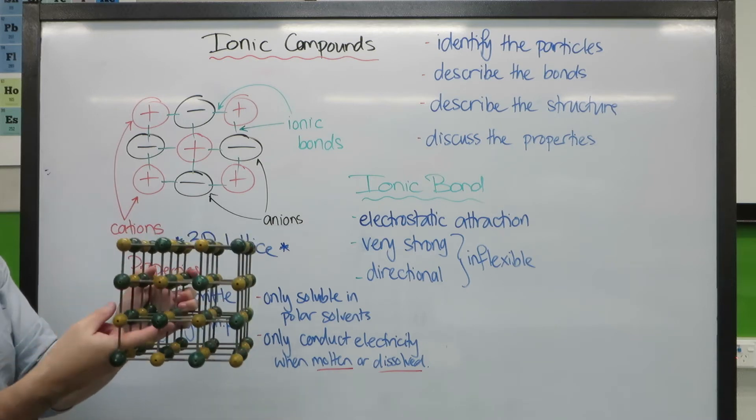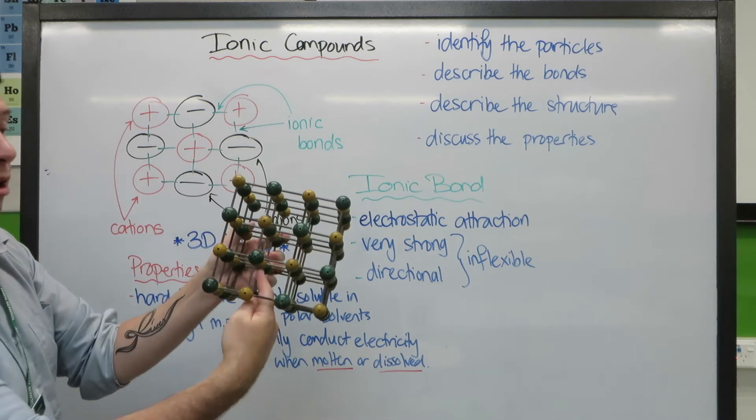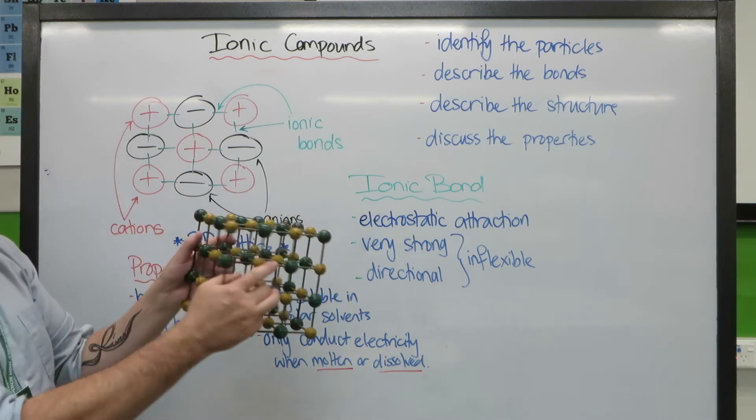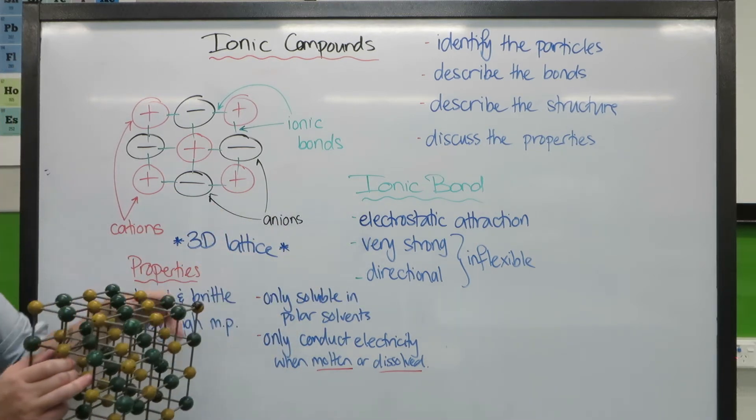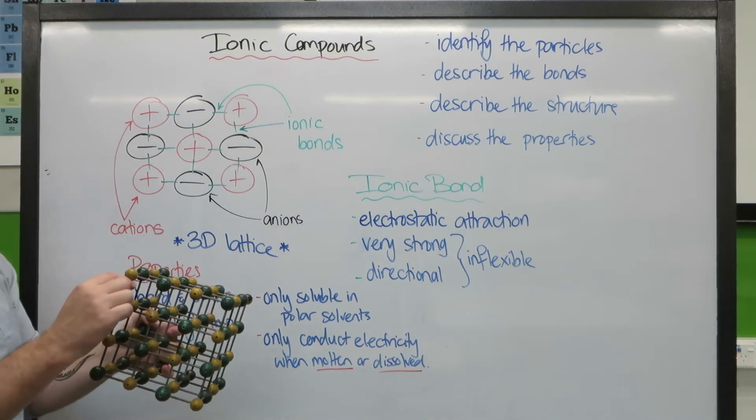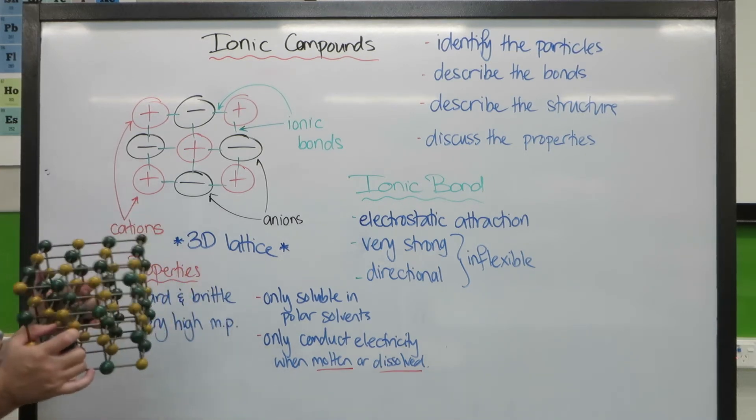Every ion, when we look in the middle of it, is attached to multiple other ions of the opposite charge. This is what we call a 3D lattice. Its 3D lattice and the nature of the ionic bond help us explain a lot of the properties.